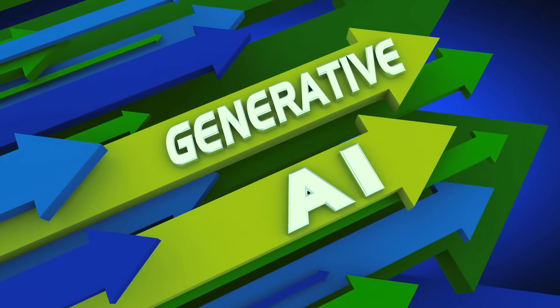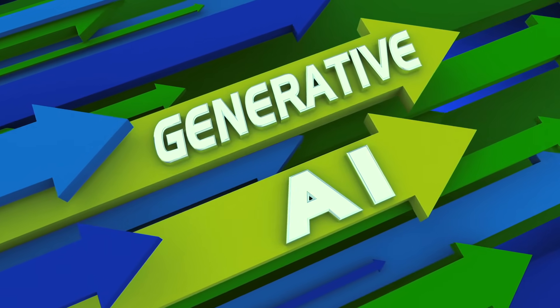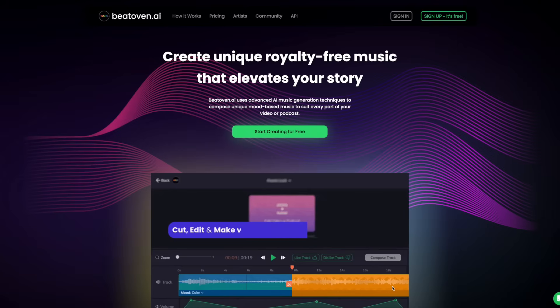First, let's talk about Generative AI. This term refers to a type of artificial intelligence specifically designed to generate new content. This could be anything from text, images and music to simulations and even videos.